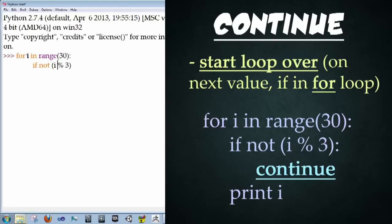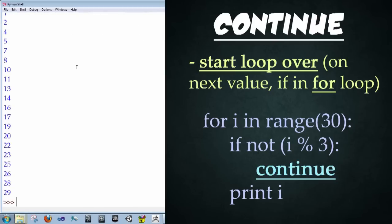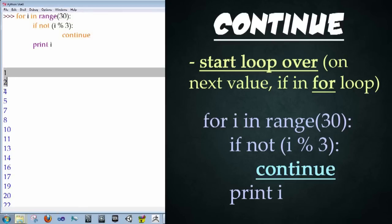What this says is for every value in the range 30, if the number has some remainder when divided by 3, and we're including the not so that we're just getting multiples of 3, then we're going to skip over them. So we're going to type in continue, and then type print i, enter, enter.